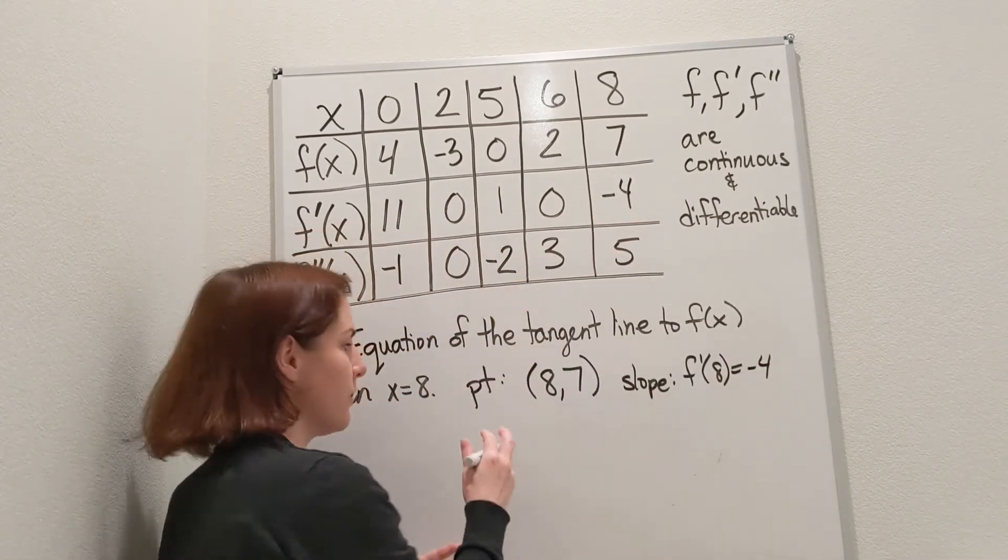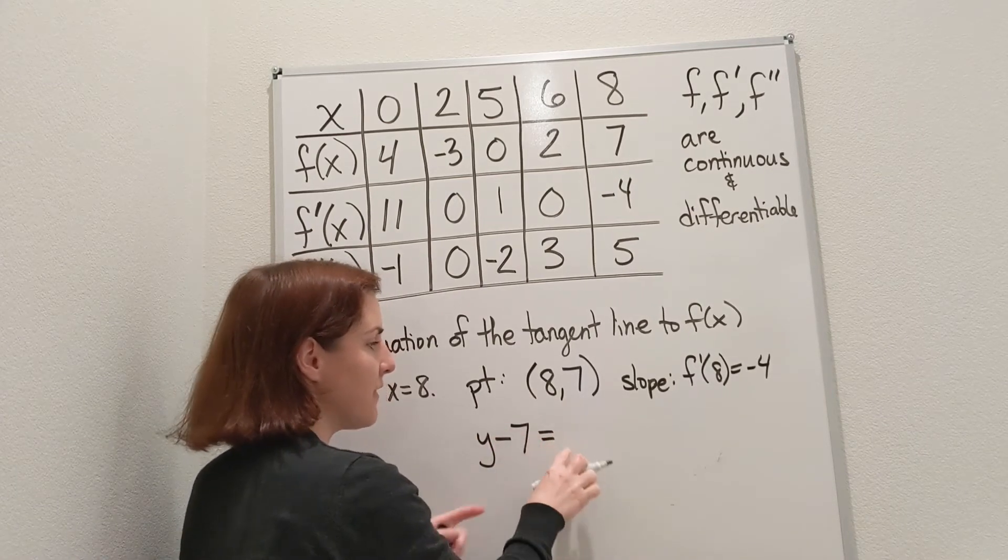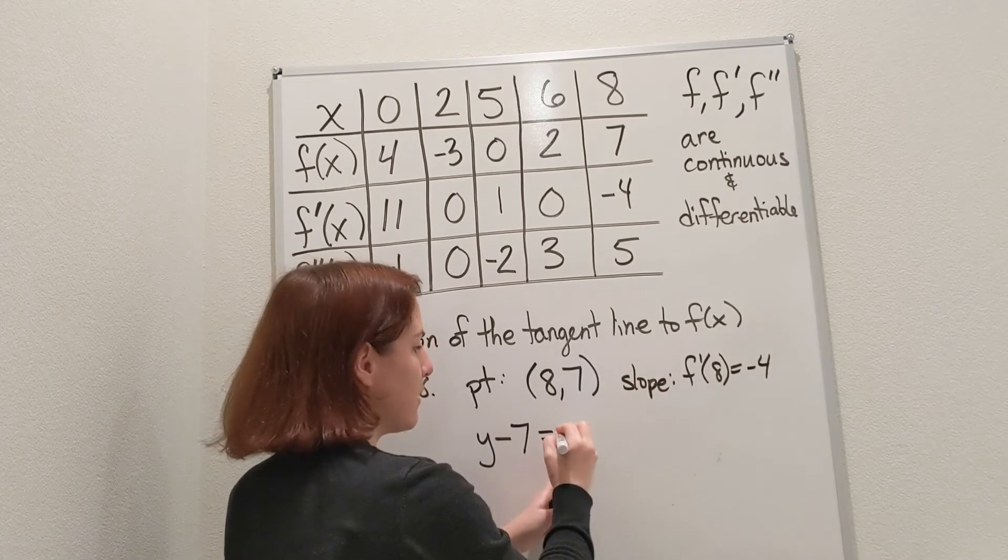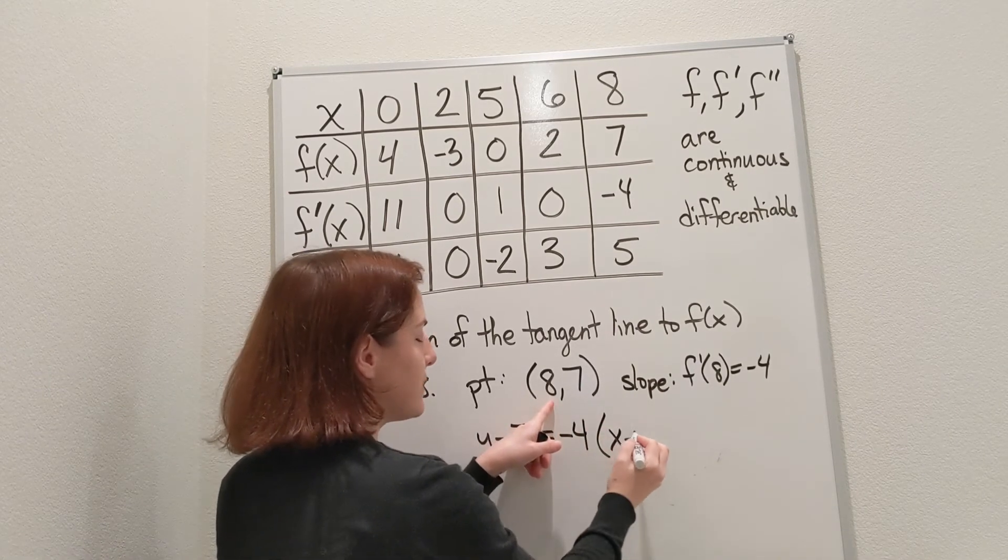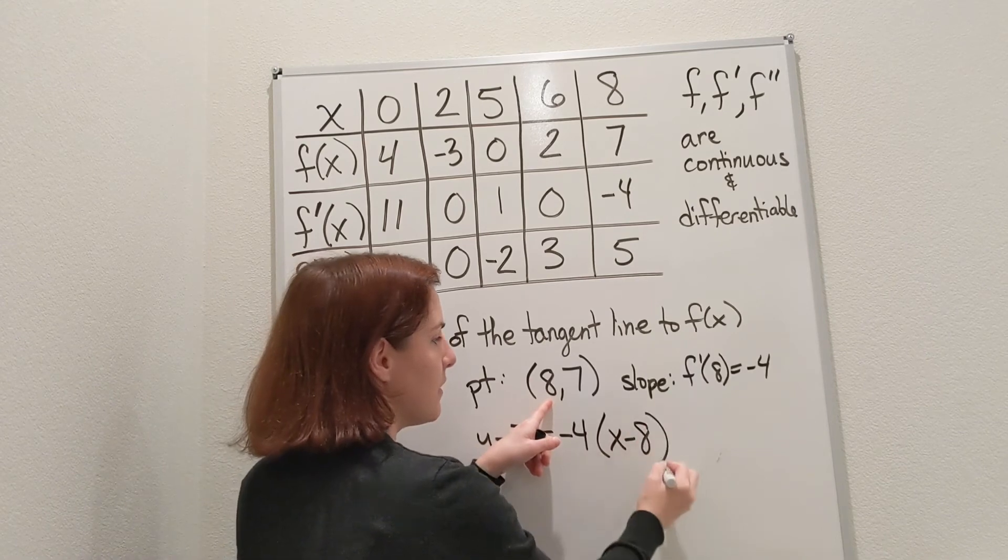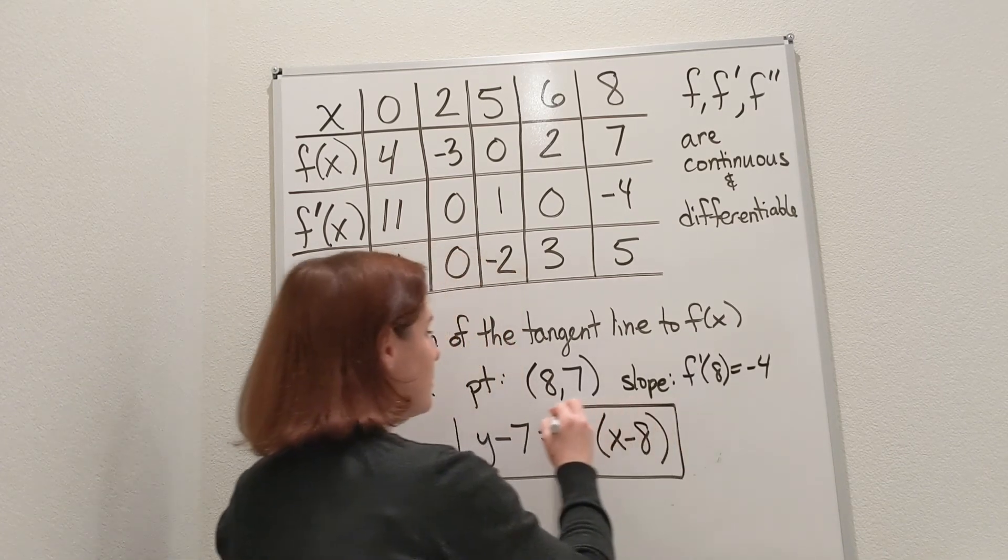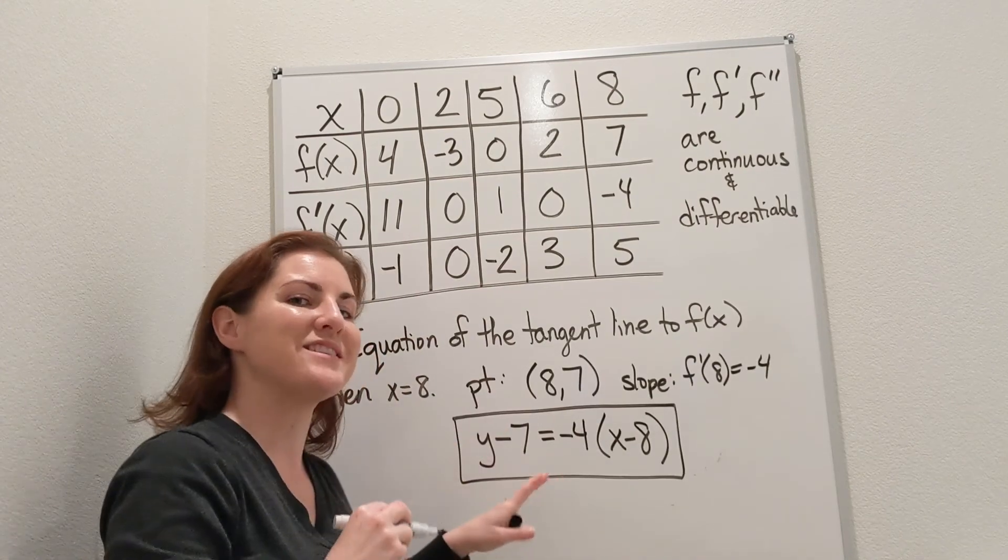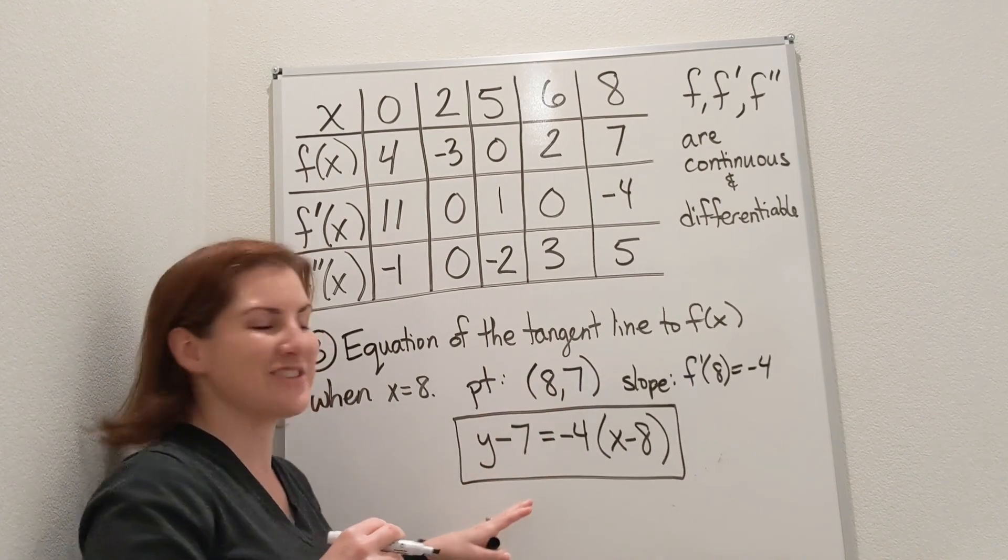I'm going to use point-slope form. I do y minus the y-coordinate, 7, equals, and then m, the slope value, negative 4, and then x minus the x-coordinate. And right here, this is our equation of the tangent line. That's also known as the local linearization. There are different ways that it could be asked: the tangent line or the local linearization.